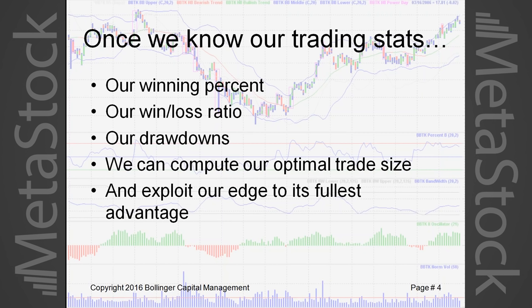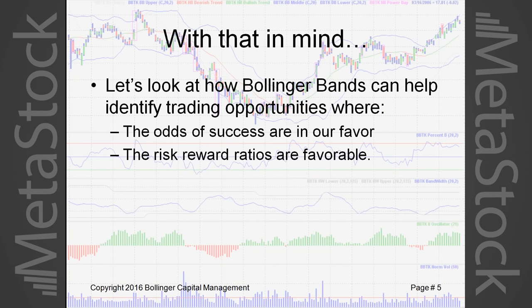Those are the two primary avenues to better one's investment performance, and we can use Bollinger Bands and related tools to accomplish both goals. Once we know our trading stats — our winning percent, win/loss ratio, and drawdowns — we can compute our optimal trade size and exploit our edge to the fullest. I highly recommend the work of Ralph Vince on Optimal F and also the work of Van Tharp on optimal trade sizing.